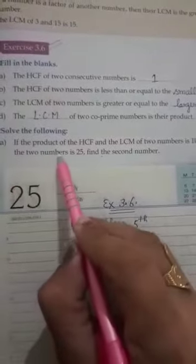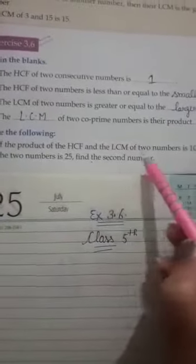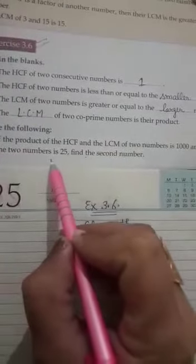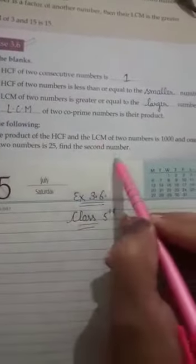If the product of the HCF and the LCM of two numbers is 1000 and one of the two numbers is 25, find the second number.